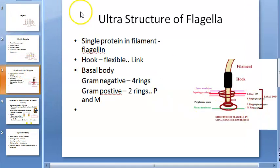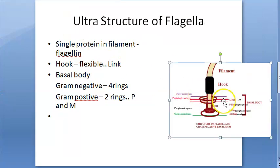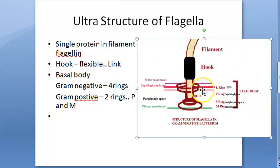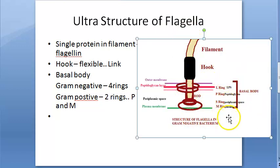Structure of flagella: three parts - filament, hook, and basal body. In gram-negative bacteria there are four rings: L, P, S, M. In gram-positive bacteria only P and M rings are present.